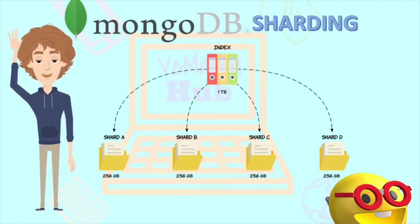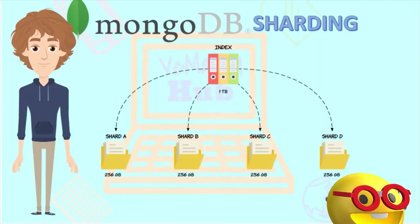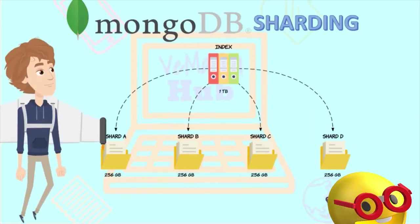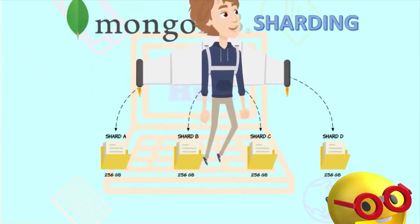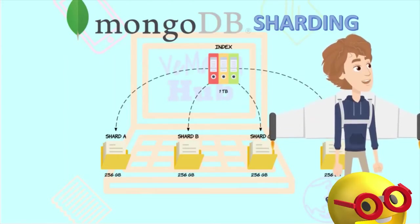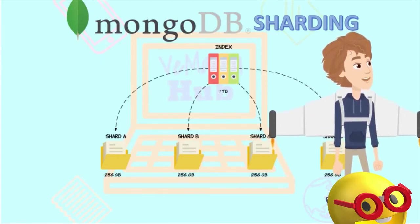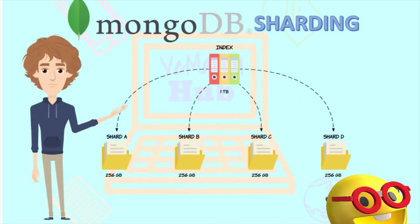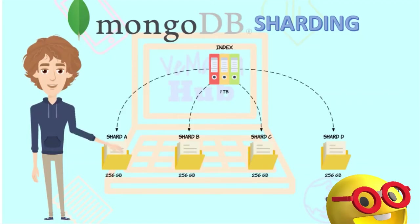Welcome to my channel. In this video I'll be discussing MongoDB sharding. Sharding is basically horizontal scaling of databases, as compared to the traditional vertical scaling of adding more CPU and RAM to the current system. For example, if you have a huge set of files you might segregate it into smaller sets for ease.